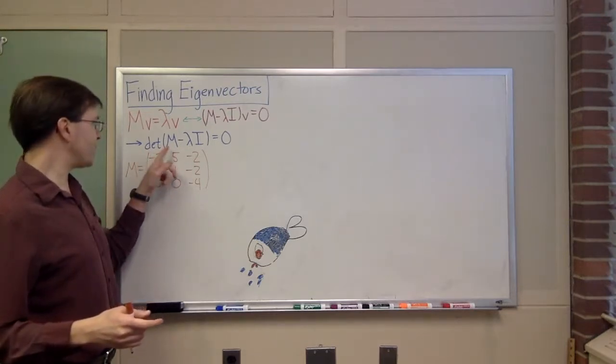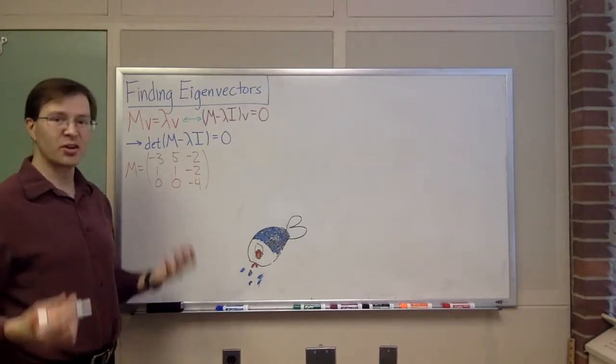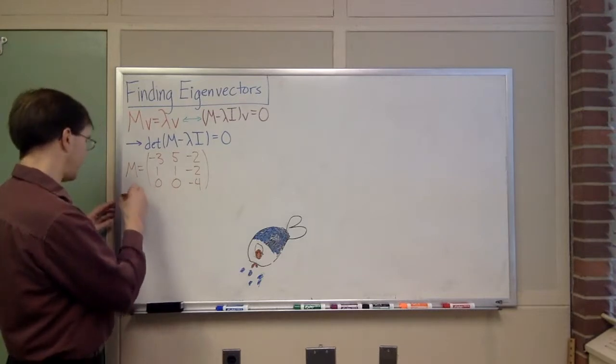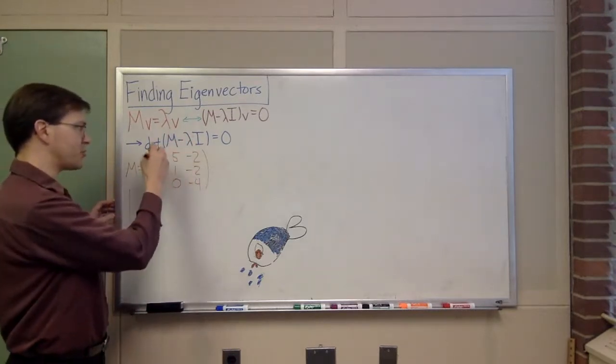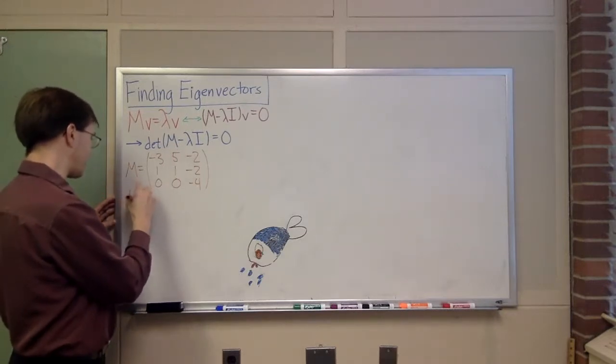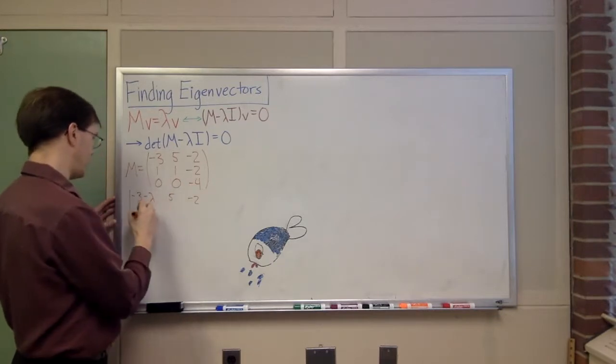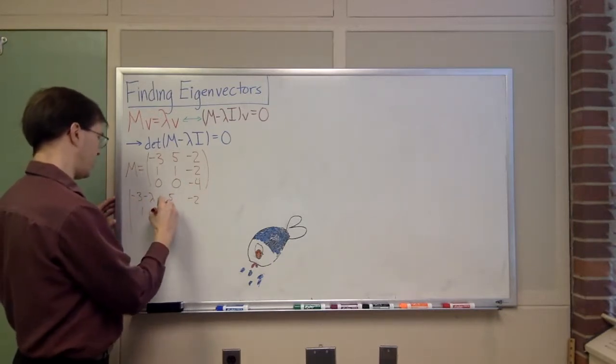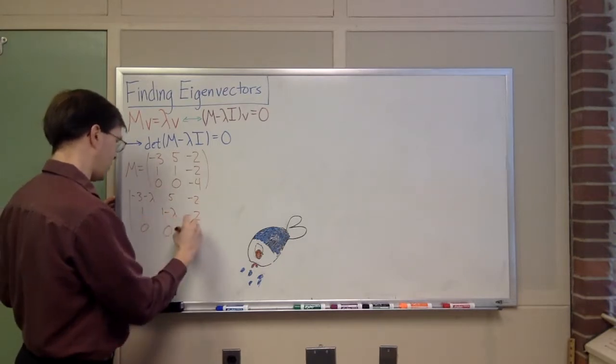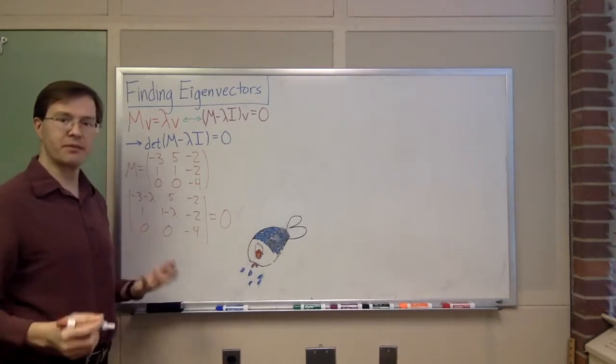With lambda being a symbolic constant, find the determinant of that and set it equal to 0. Here, what I'm going to do, I'm going to do M minus lambda I, take all the elements down the diagonal. So the determinant is a vertical bar, so -3 minus lambda, 5, -2, then 1, 1 minus lambda, -2, 0, 0, -4. There it is. I want to set that equal to 0. That's my plan.